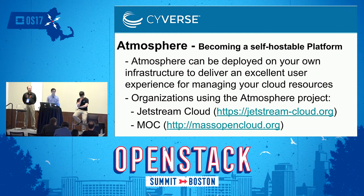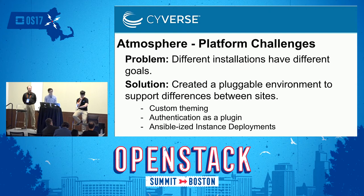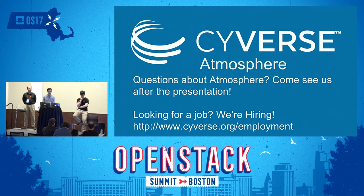Here's an example of a versioned image as displayed by Troposphere. Each version has a description that explains what has changed and represents a Glance image on one or more OpenStack cloud providers. With the introduction of Troposphere, we changed our focus from making cloud computing easy for end users to making it easy for OpenStack site operators. In early 2016, we became a self-hostable platform. In February 2016, Jetstream Cloud became the first organization to use Atmosphere as a platform, and in September 2016, Massachusetts Open Cloud became the second. Every organization adopts Atmosphere with a different end goal in mind. This meant implementing a custom theme, making authentication a plugin that could be easily swapped out, and converting instance deployments to Ansible, enabling site operators to choose what to deploy on an instance before handing control over to the user.